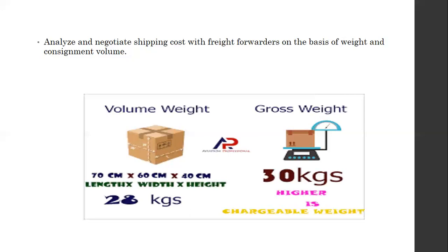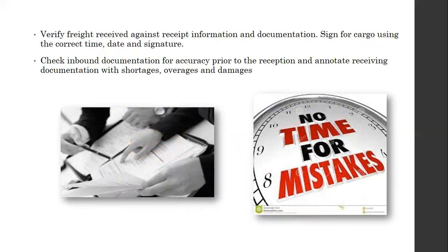Another responsibility is verifying freight received against the invoice and documentation. When we export goods, we receive freight invoices from the shipping line — the amount we have to pay for freight. In some cases, if the CHA also provides freight forwarding services, we pay directly to the freight forwarder and they pay the shipping line. When we receive the bills for freight and clearance, we check them against the receipt and all documents.